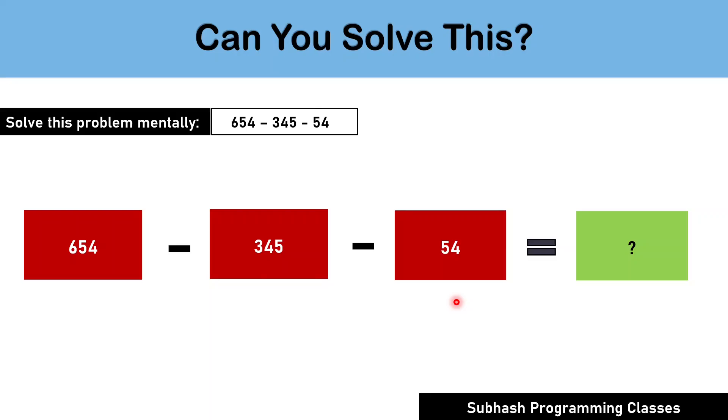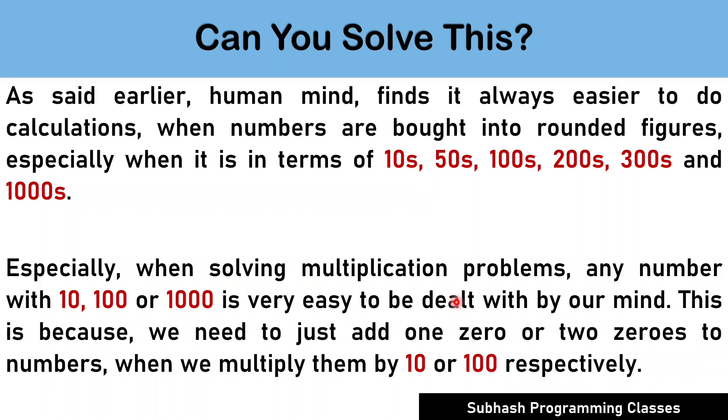If you are done, then let us move on. As said earlier, human mind finds it always easier to do calculations when numbers are brought into rounded figures, especially when it is in terms of 10s, 50s, 100s, 200s, 300s, and 1000s. Especially when solving multiplication problems, any number with 10, 100 or 1000 is very easy to be dealt with by our mind. This is because we need to just add 1 zero or 2 zeros to numbers when we multiply them by 10 or 100 respectively. Now, let us solve some interesting multiplication problems. While solving multiplication numbers, try to bring the numbers in the format of rounded numbers like 10s or 100s or 1000s so that it becomes easy for calculation.